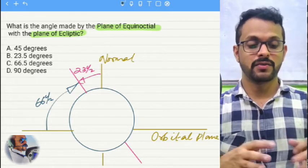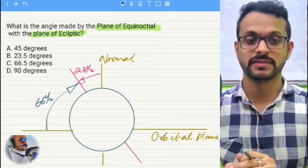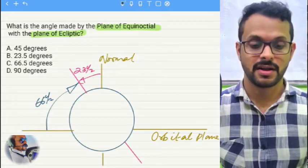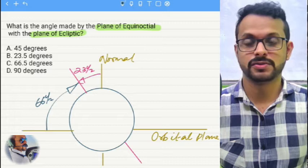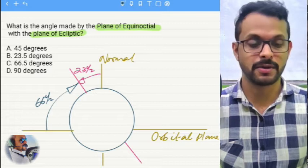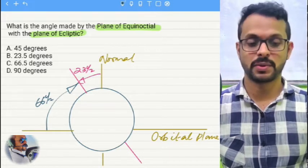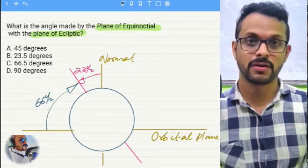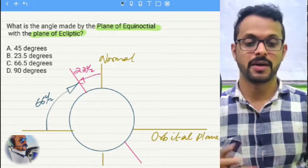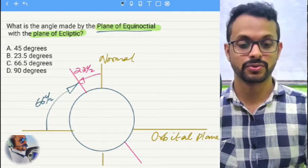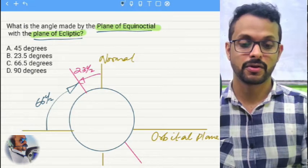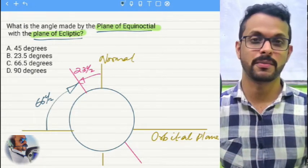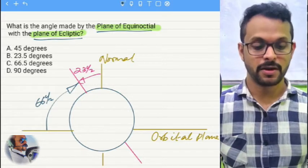One of my previous students pitched in saying this is a good question to re-emphasize. This question is a bit tricky — not because the knowledge is out of the ordinary, but because of a couple of terms used. If you're not really sure about what the equinoctial or ecliptic plane is, you might fumble and go with the wrong answers.